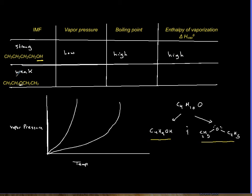On the other hand, if your IMF is weak, if you have, in this case, only dipole-dipole, your vapor pressure is high. They're not going to hold on to each other in liquid phase. They rather turn into vapor which exerts the pressure. Their boiling point is low. You can really convert them to gas at low temperature. And delta H vaporization for them is also low. So these are the relationships.